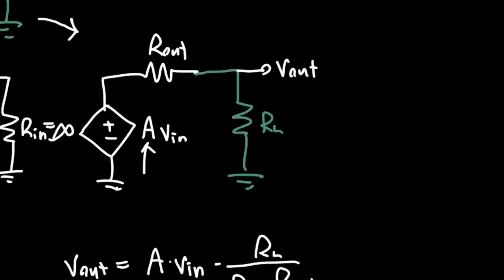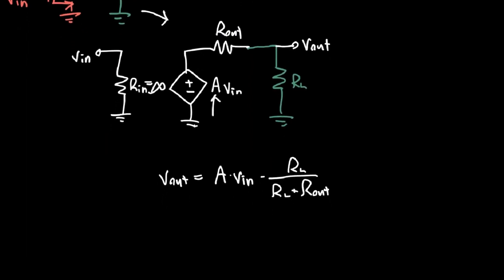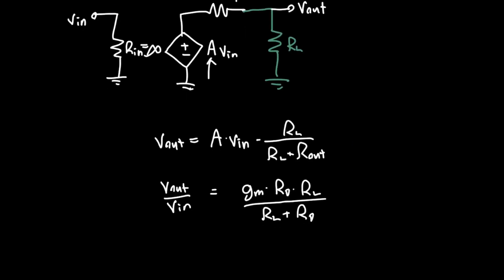Rather than redoing all the analysis, if we know what this A term is - and I'm just going to tell you right now A is just equal to g_m times RD - we don't have to redo anything. If we're interested in this output voltage now V_out, it's just a voltage divider. It's just A times V_in times R_L over R_L plus R_out. If we write out the whole thing, V_out over V_in equals g_m times RD times R_L divided by R_L plus RD.